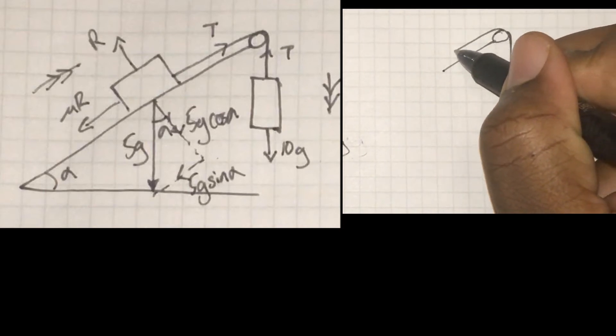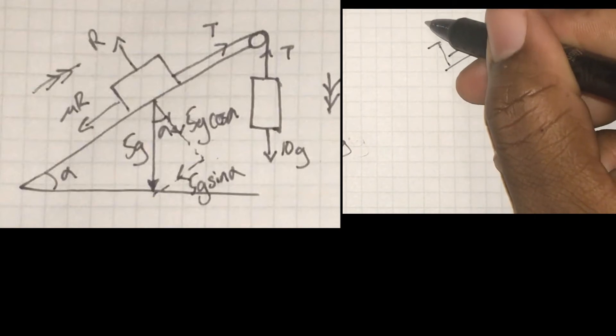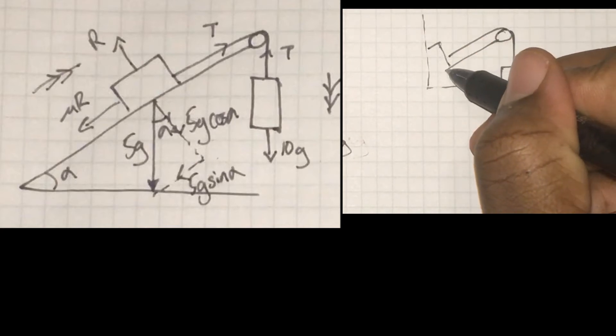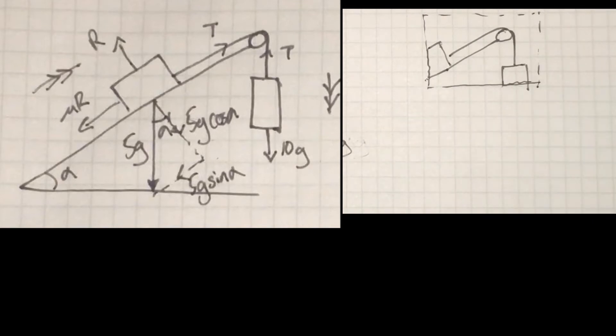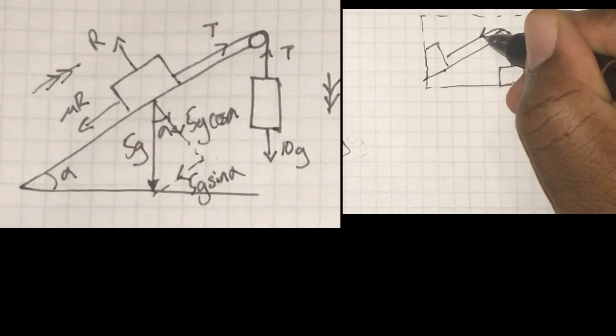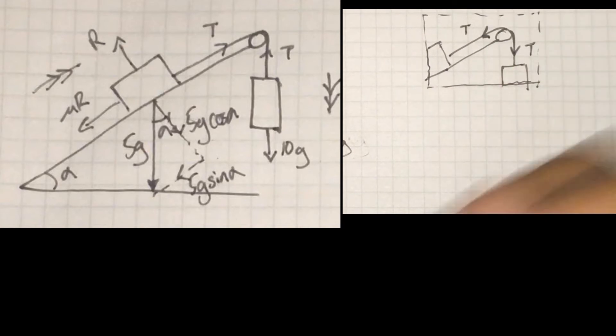So I'm just going to redraw to zoom in and focus just on the pulley. Now just a quick consideration you may not be aware of. Tension in the string, we usually draw the tension going away from the particles that we're focusing on. And now that we're focusing on the pulley, we're going to draw the tension going away from the pulley. So it's really just away from the object of interest.